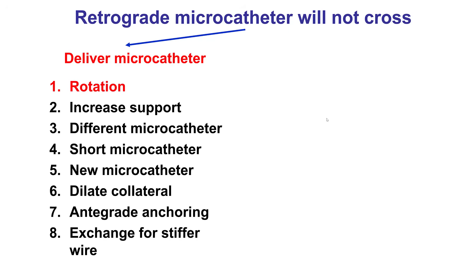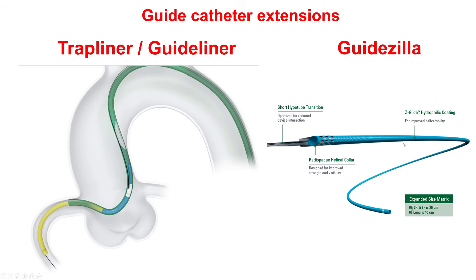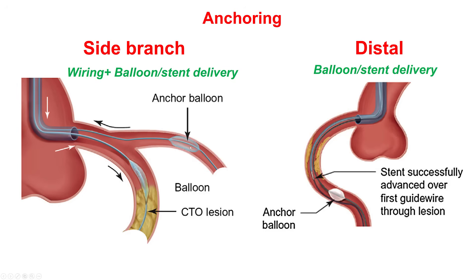Quite often, what helps is to increase support. The simplest way is to have an assistant or a second operator put some forward pressure on the retrograde catheter, which increases support for advancing the microcatheter. Other options for support are to use a guide catheter extension or the side branch anchoring technique. One concern with a guide extension is proximal disease in the donor vessel due to the larger profile and the possibility of causing ischemia. The other option is to advance a wire into a side branch with a balloon and use this as a side branch anchor balloon.